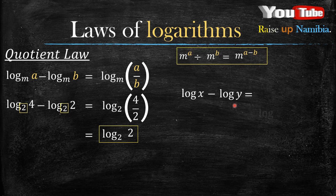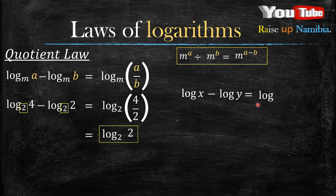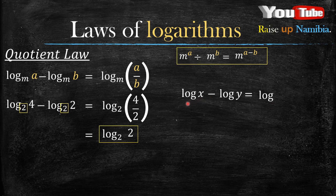So each time you see that there's no base, it's a common logarithm, which means the base is 10. Now, you can choose to write 10 there, or even if you don't write 10, your marker will know what you mean.